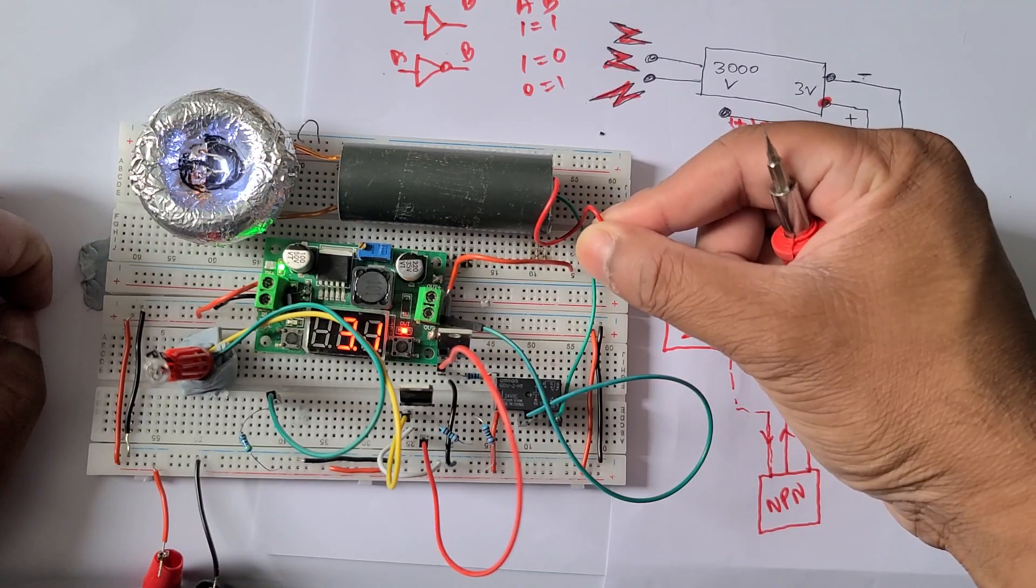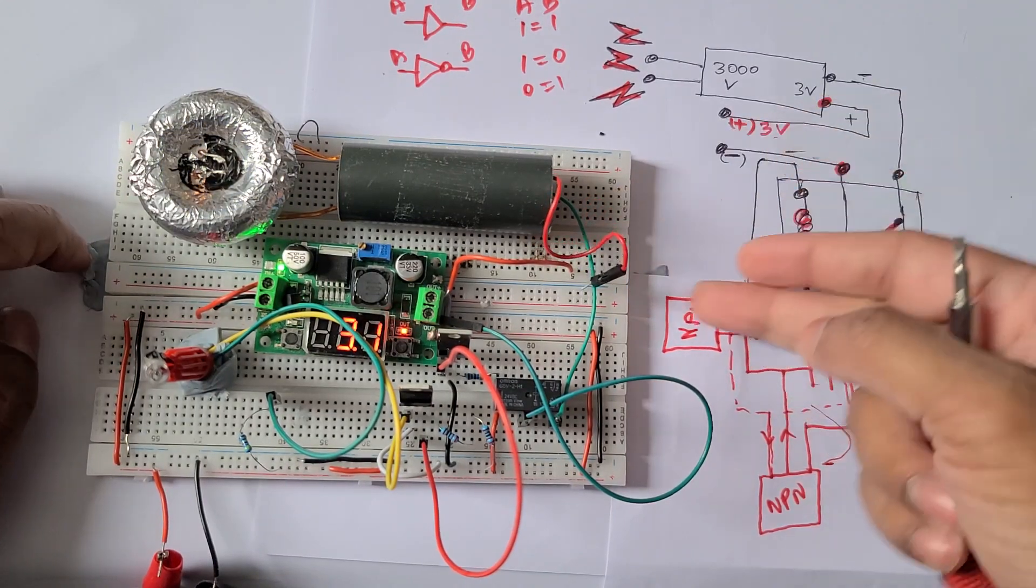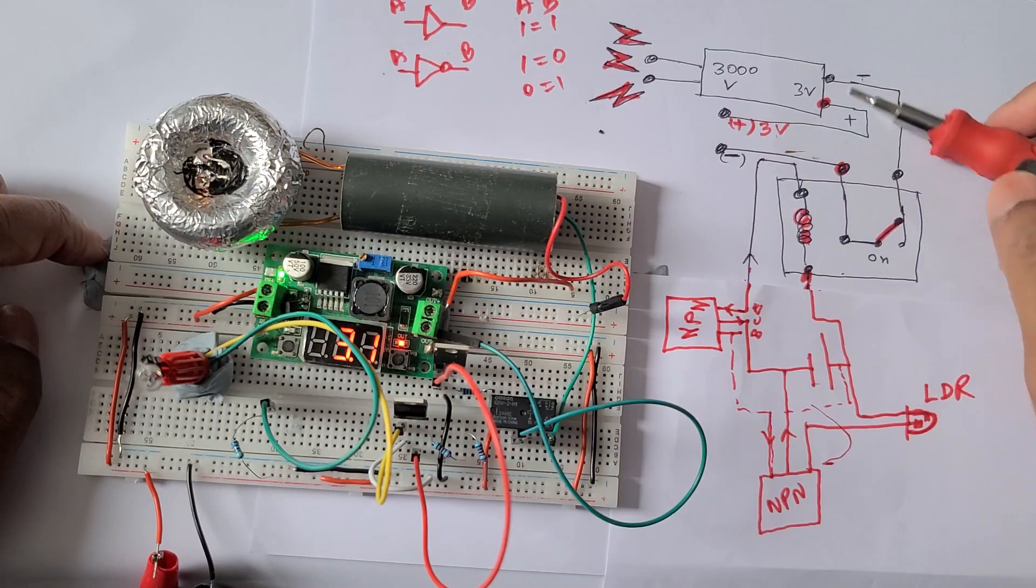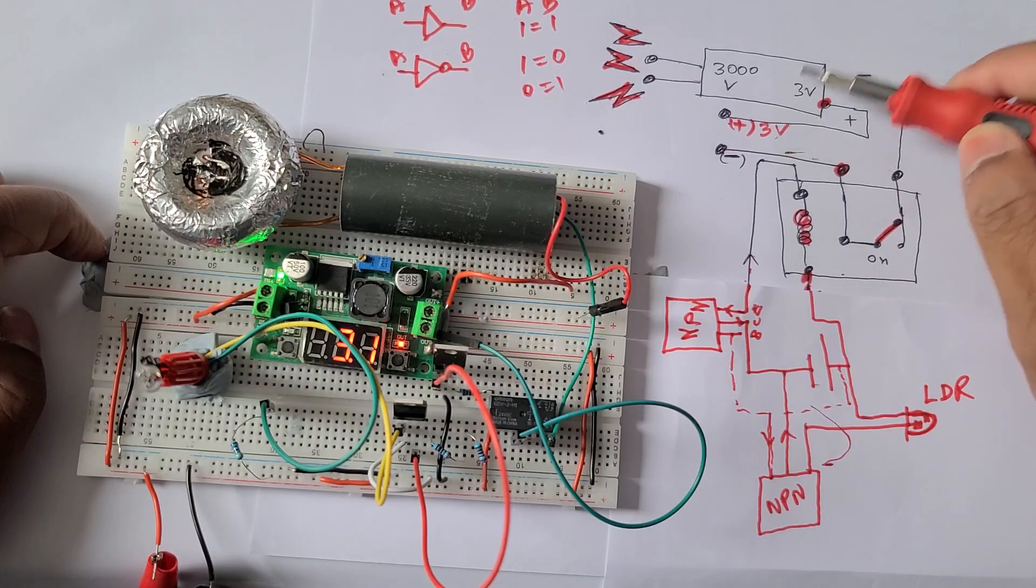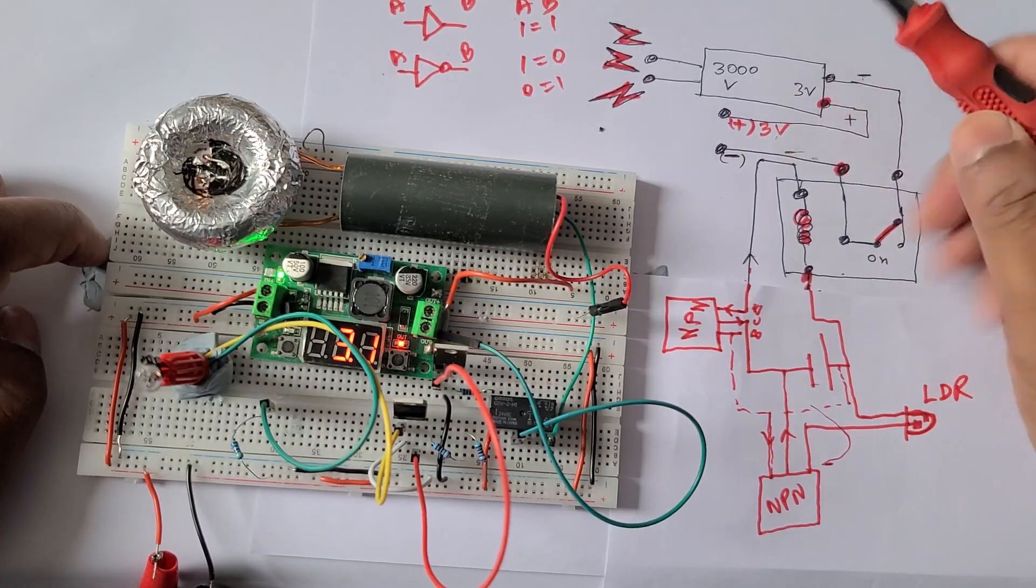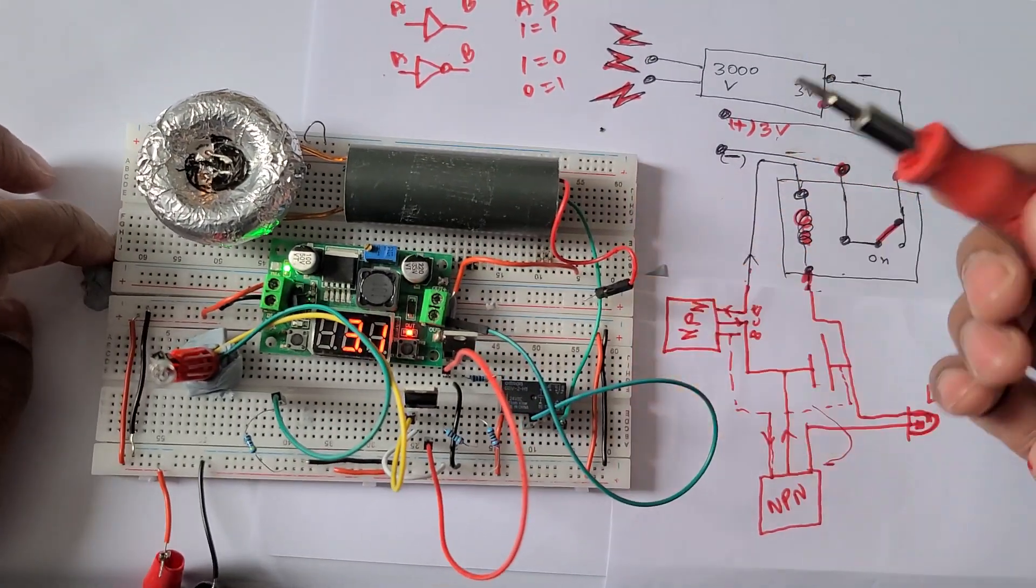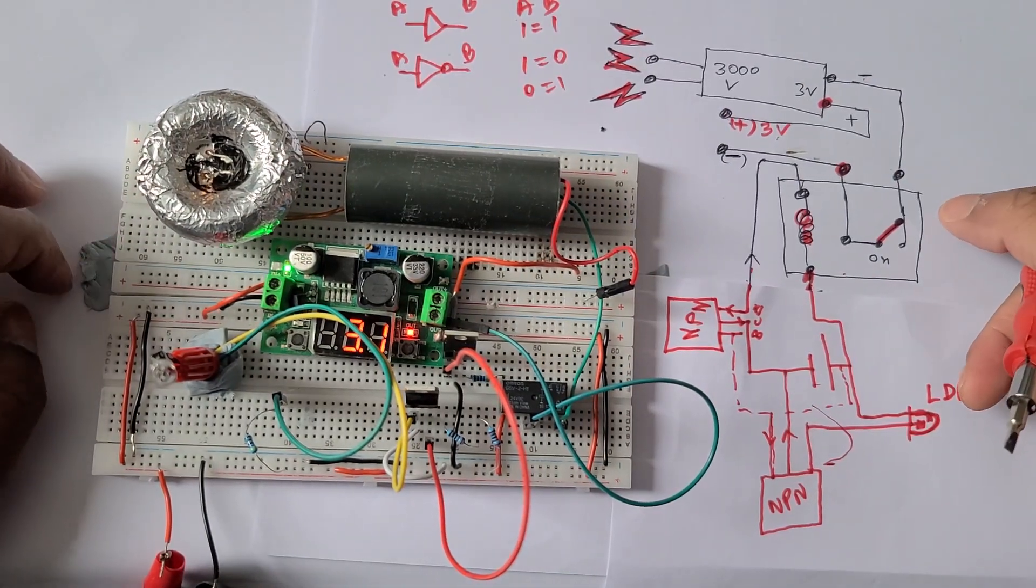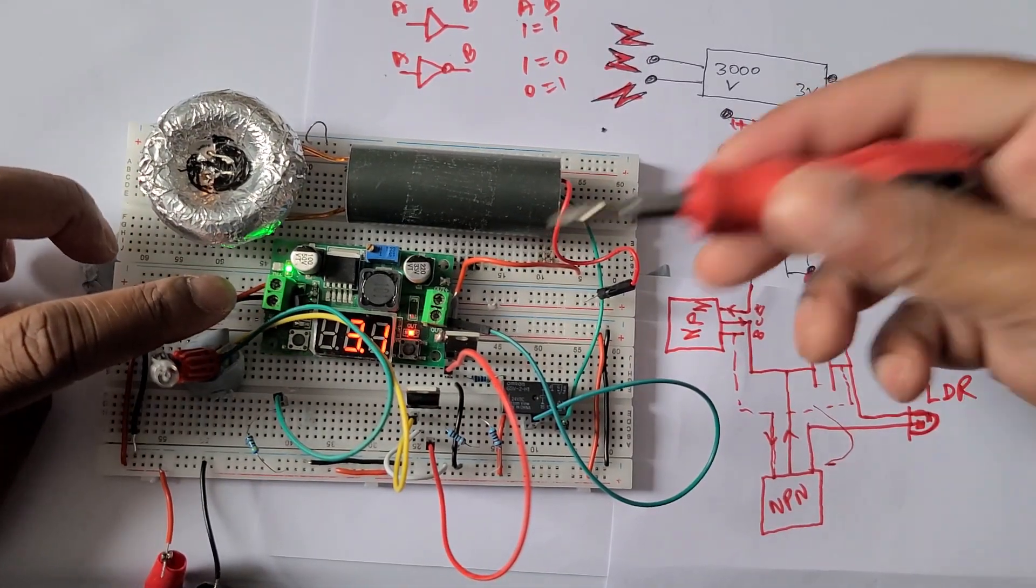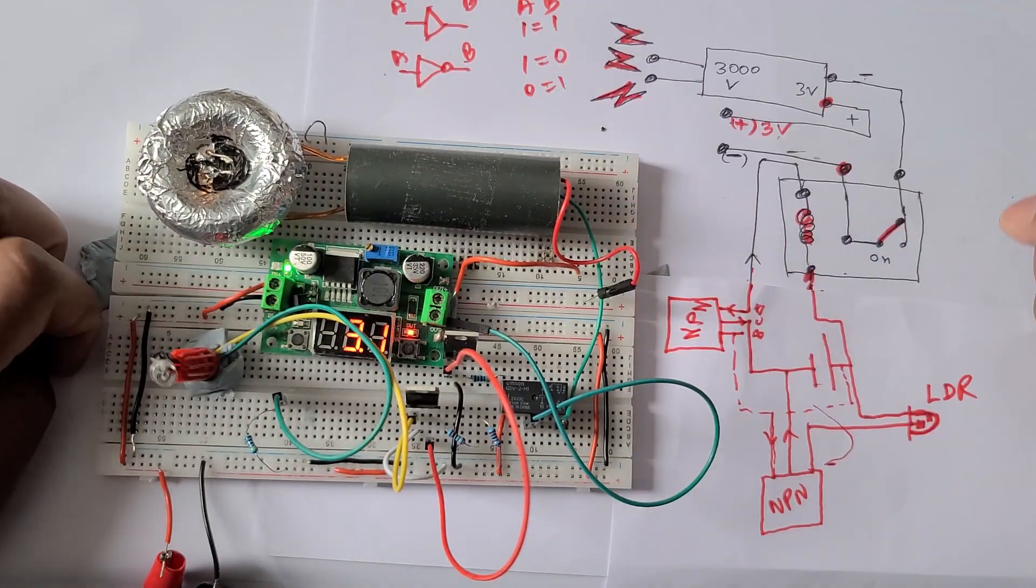So this is a 3 volt to 3000 volt resonator circuit. In the diagram you can see it takes 3 volt plus minus and converts it to 3000 volt. Now here I'm using a DC to DC buck converter, so basically it takes 10 volt here and converts 3 volt there and it completes the circuit.